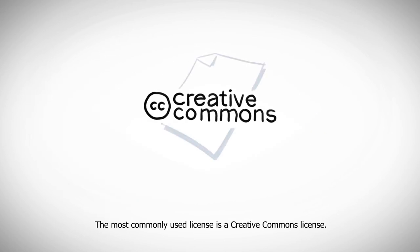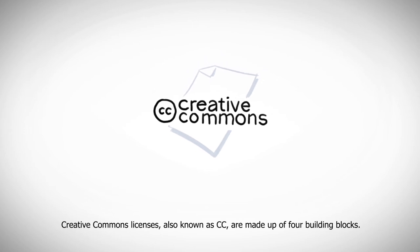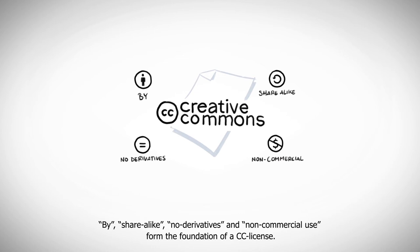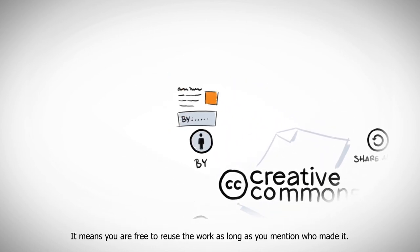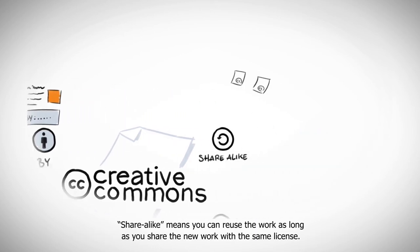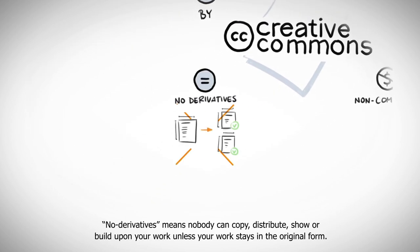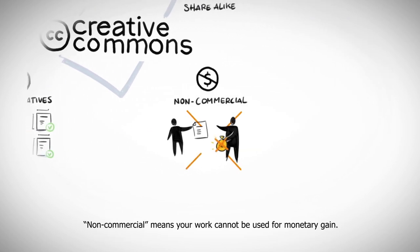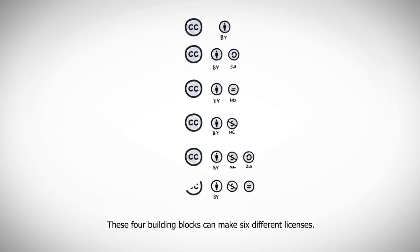The most commonly used license is a Creative Commons license. Creative Commons licenses, also known as CC, are made up of four building blocks: BY, Share Alike, No Derivatives, and Non-Commercial. BY is a standard beginning — it means you're free to reuse the work as long as you mention who made it. Share Alike means you can reuse the work as long as you share the new work with the same license. No Derivatives means nobody can copy, distribute, show, or build upon your work unless it stays in its original form. Non-Commercial means your work cannot be used for monetary gain. These four building blocks can make six different licenses.